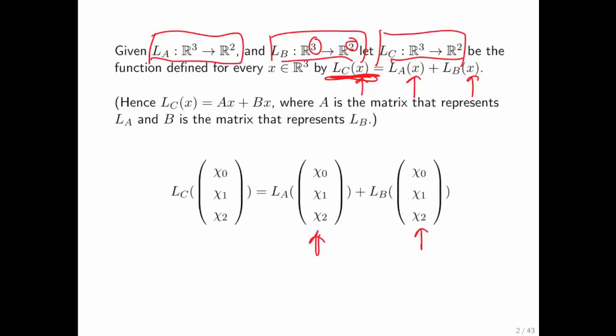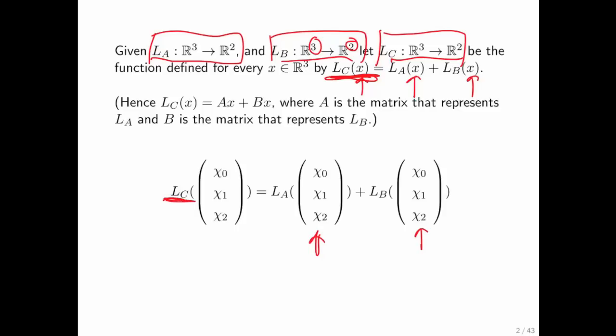In goes vector x into both the linear transformation LA and LB. Take the results and add them. Then you get the new vector function. And as always, we ask the question: is this a linear transformation? What is the matrix that represents it? We're going to use this to motivate how two matrices are added.